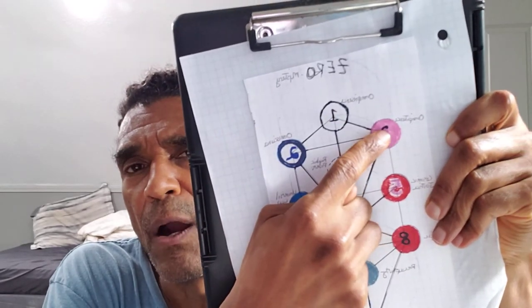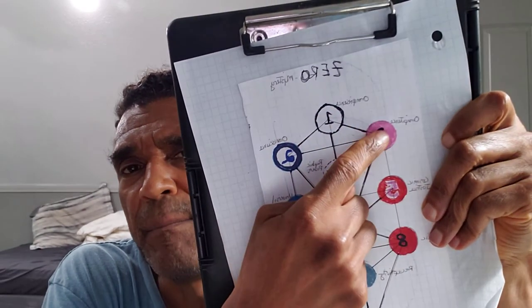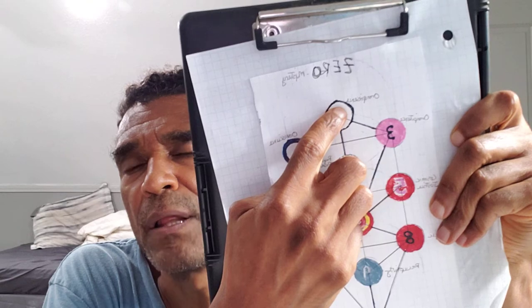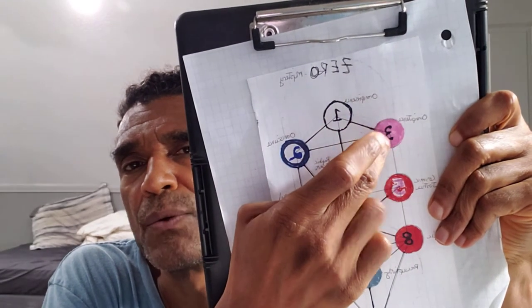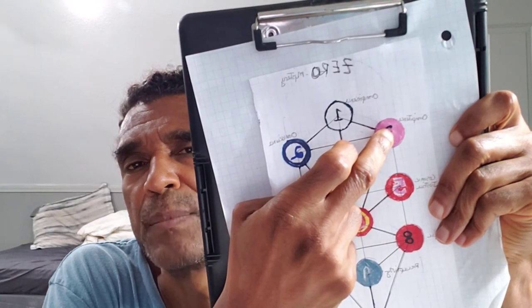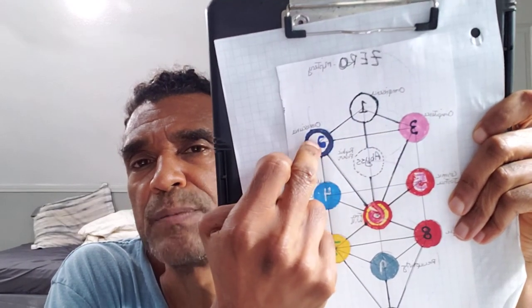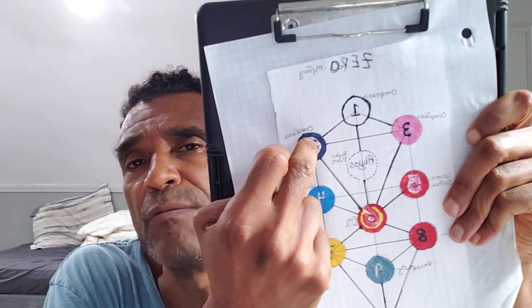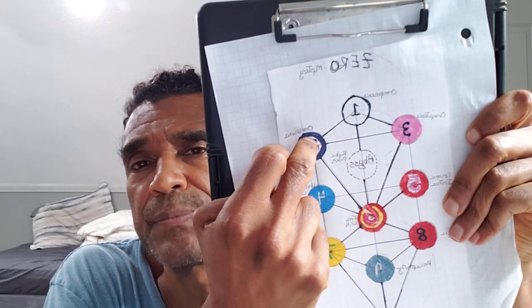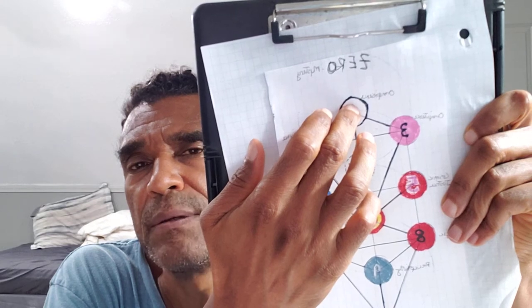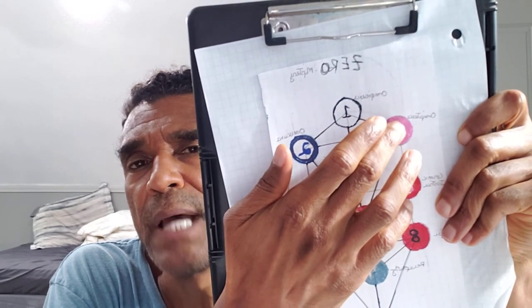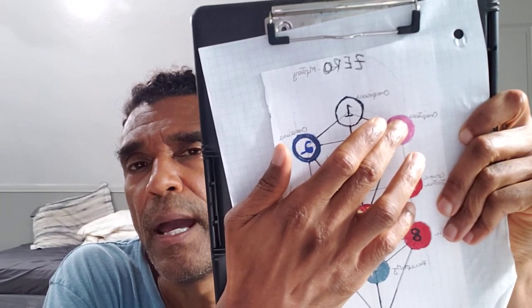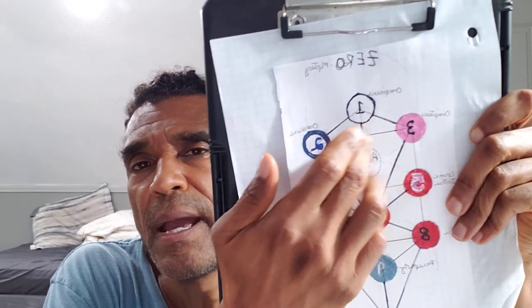And it usually calls for us to kind of put ourselves out there, to make ourselves more vulnerable. Okay, now three, two, and one at the top of the tree are our divine faculties. Omnipotence, all-powerful. Omniscience, all-knowing. Omnipresent, all present, all at once, eternally. This also corresponds to like our culminated mission in life.